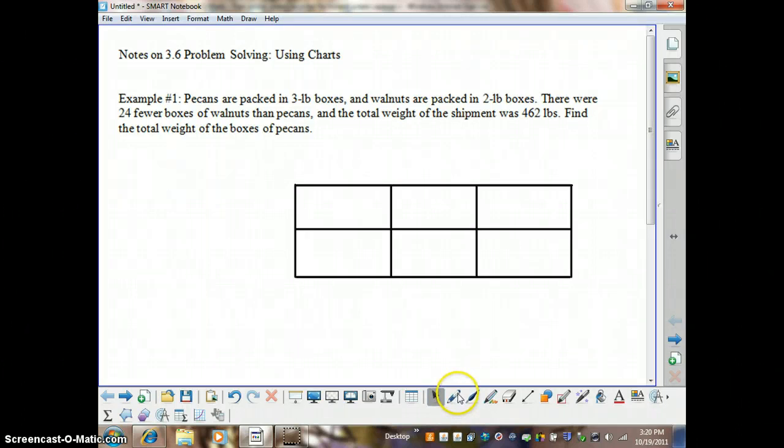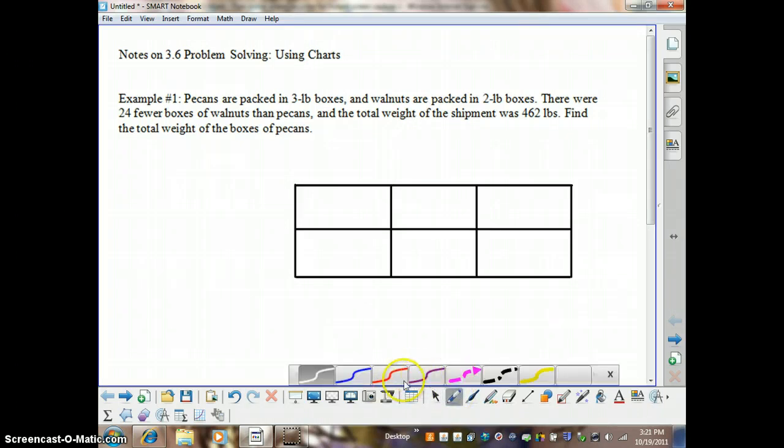Here we have a problem that states that pecans are packed in three-pound boxes and walnuts are packed in two-pound boxes. So right away we know we have two different types of nuts: pecans and walnuts.